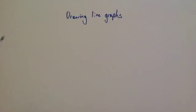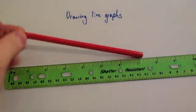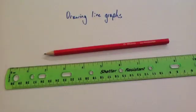In this video we're going to look at how to draw a line graph. To draw a line graph you're going to need some equipment: a ruler and a pencil. Perhaps you might also need a rubber in case you make a mistake, but they're the main bits of equipment you're going to need.